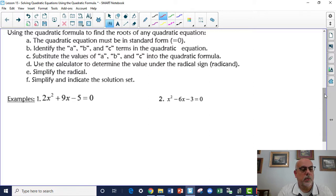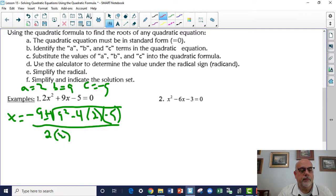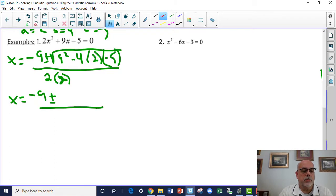So on example one, a is 2, b is 9, and c is negative 5. So x is equal to negative 9 plus or minus the square root of 9 squared minus 4 times 2 times negative 5 all over 2 times 2. So you have x equals negative 9 plus or minus, and we know it's going to be all over 4.